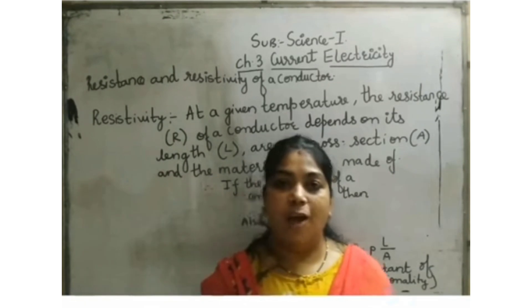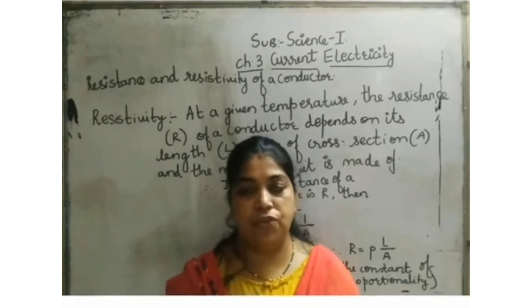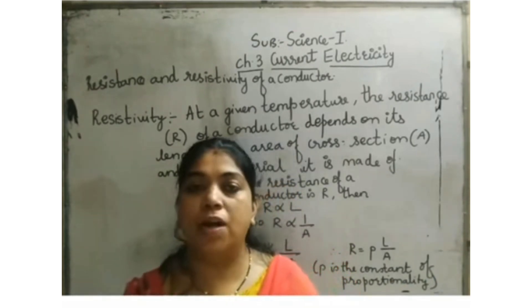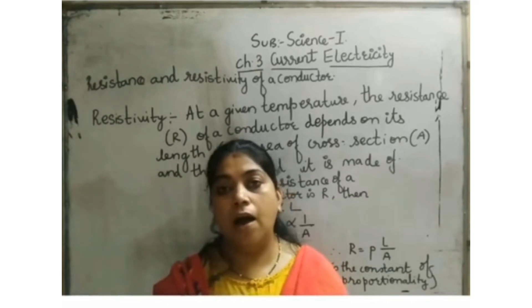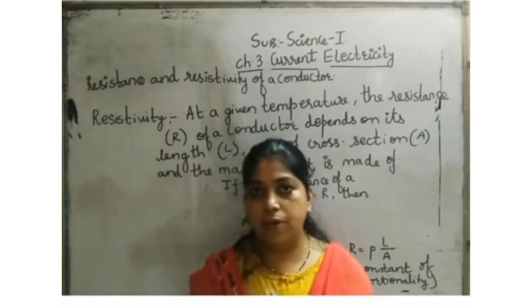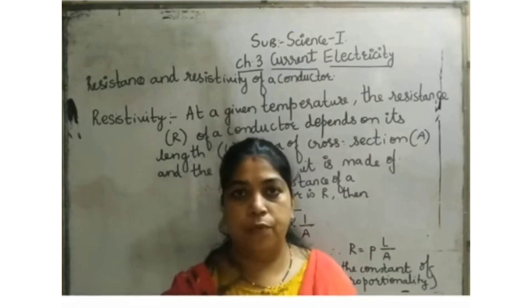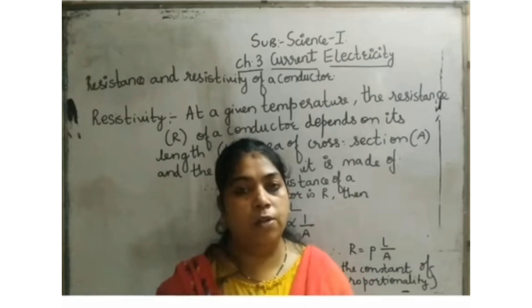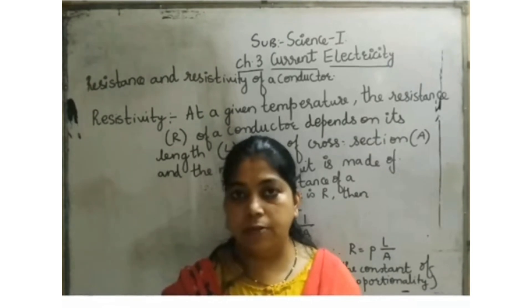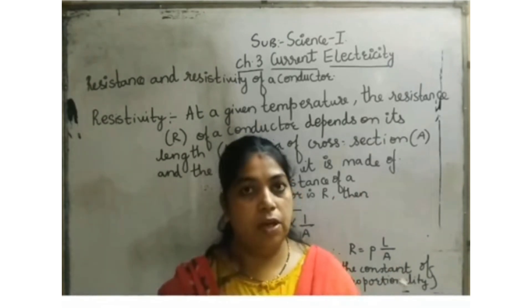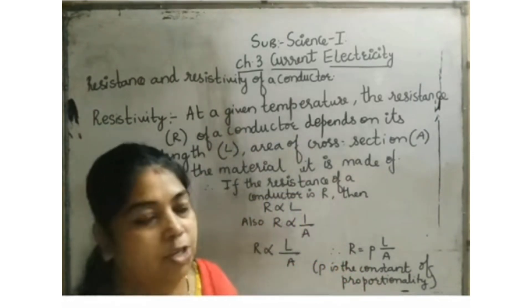Now we will start with resistance. Our topic for today is resistance. We have already studied what are free electrons and according to the free electrons, I have shown you in the figure how an atom starts moving when current is applied to the electrons inside the atom. We have seen two pictures: first the movement of the electrons is random, they are moving anyhow randomly. But in the second one, when the current is applied to the electron or to that particular object, they start moving in a straight line direction.